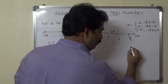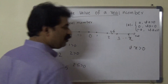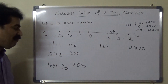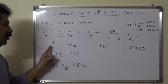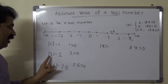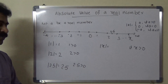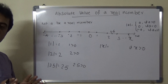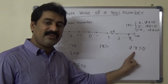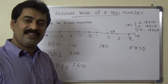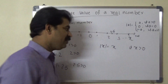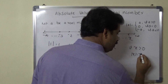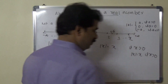So if x is a positive real number — for example, 1, 2, and 2.5 are all positive real numbers with absolute values equal to themselves — then the absolute value of x equals x. So we can write: absolute value of x equals x if x is greater than 0.